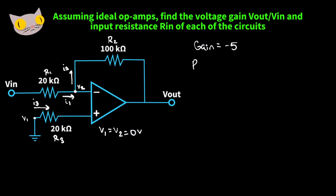And our input resistance will be, once again, 20k ohms. So we did four problems with four different op amp circuits and got the same answers for all four. I thought it was important to go through those to show the concepts behind finding these values. I hope you got something out of this video — thank you for watching, and we'll see you next time.